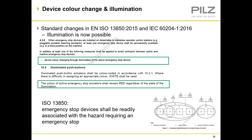At least one of the following measures shall be applied to avoid confusion between active and inactive emergency stop devices: device colour changing through illumination of the active emergency stop device. Section 10.4 of IEC 60204 part 1 covers illuminated push buttons — illuminated push button actuators shall be colour coded in accordance with section 10.2.1; where there is difficulty in assigning an appropriate colour, white shall be used. The colour of an active emergency stop actuator shall remain red regardless of the state of illumination — this means you do not flash the red part.